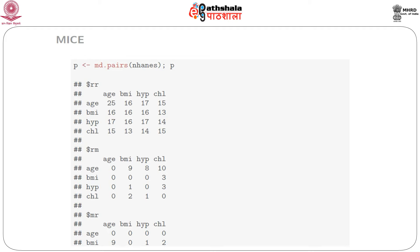One can use the md.pairs() function to see the pairwise pattern. Here we store the result in P, and typing P gives us 4 matrices showing the pattern. For example, there are 14 pairs where both hypertension and cholesterol are available. There are 3 cases where hypertension is available but cholesterol is not. There is 1 case where cholesterol is available but hypertension is not, and 7 cases where neither cholesterol nor hypertension is available.